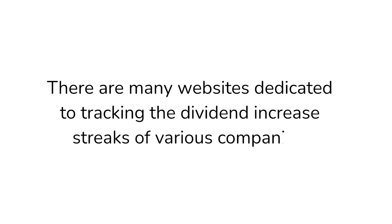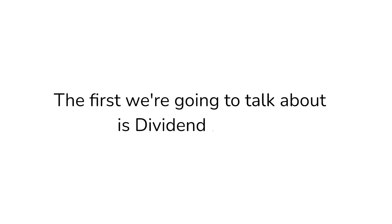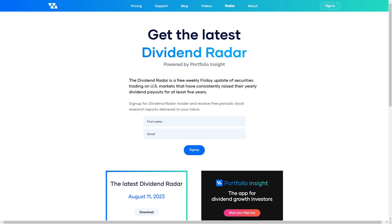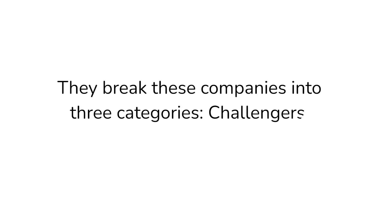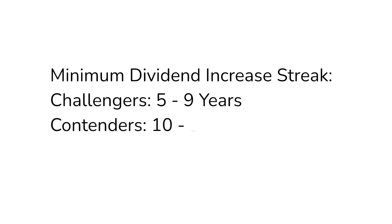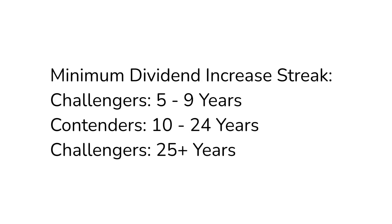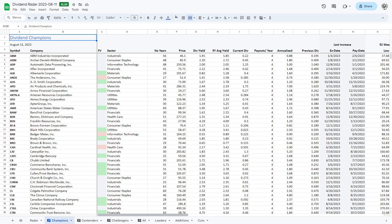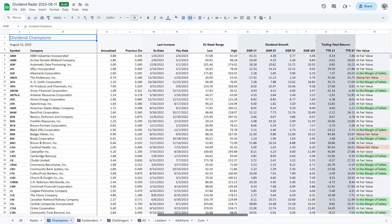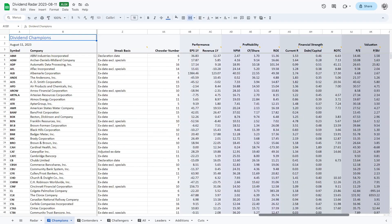There are many websites dedicated to tracking the dividend increase streaks of various companies. The first we're going to talk about is Dividend Radar. Every Friday afternoon, Dividend Radar publishes a free spreadsheet of perpetual dividend raisers. They break these companies into three categories: challengers, contenders, and champions. Challengers have raised their dividend for 5 to 9 years, contenders for 10 to 24 years, and champions for over 25 years. These stocks also must trade on US markets. The spreadsheet also provides helpful information on yield, share price, dividend per share, dividend frequency, and a whole lot more.